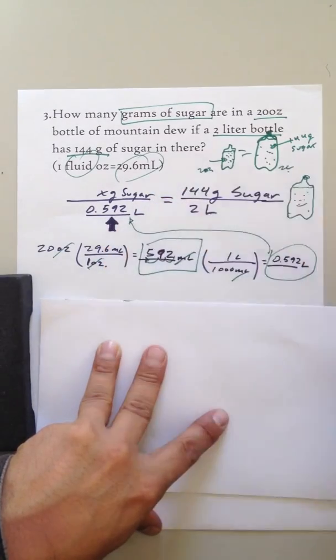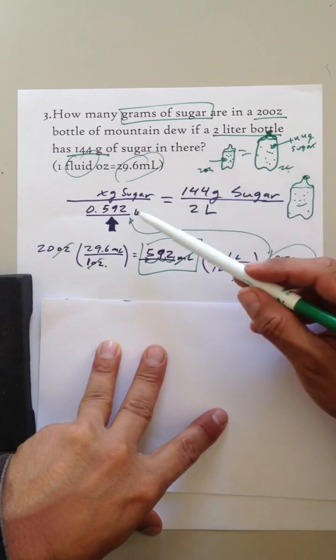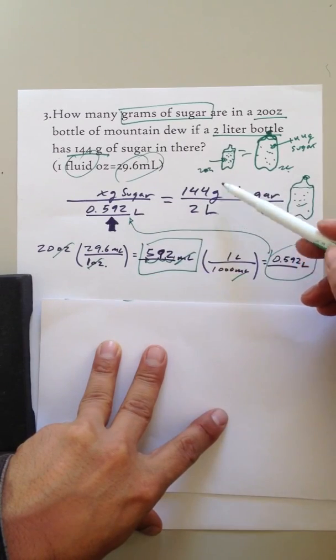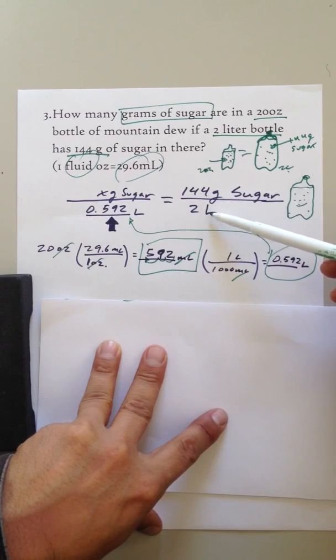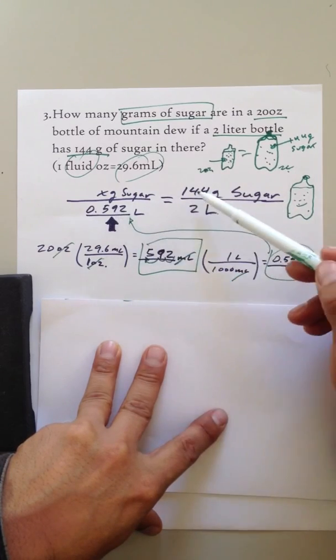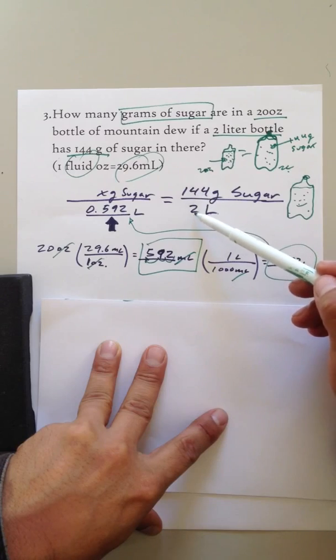Okay, so we have the liters, we have the grams, we have the liters. Can't we solve for this? Let's think in terms really quickly. 144 for 2 liters. So what is that? 70 per liter.